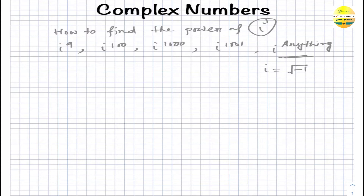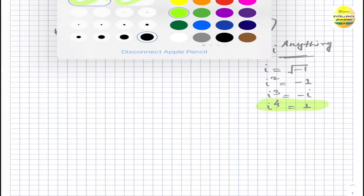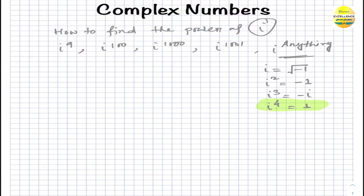We all know the value of i is the square root of minus one. Similarly, i squared can be written as minus one, i cubed is minus i, and most importantly, i to the power four is one.